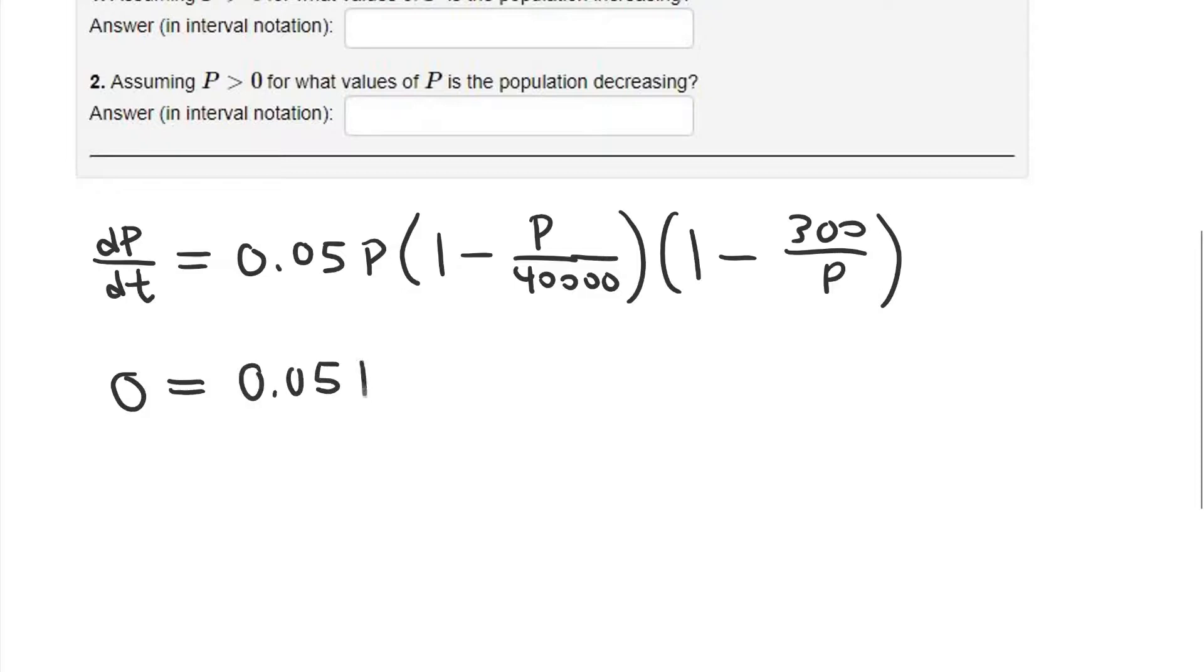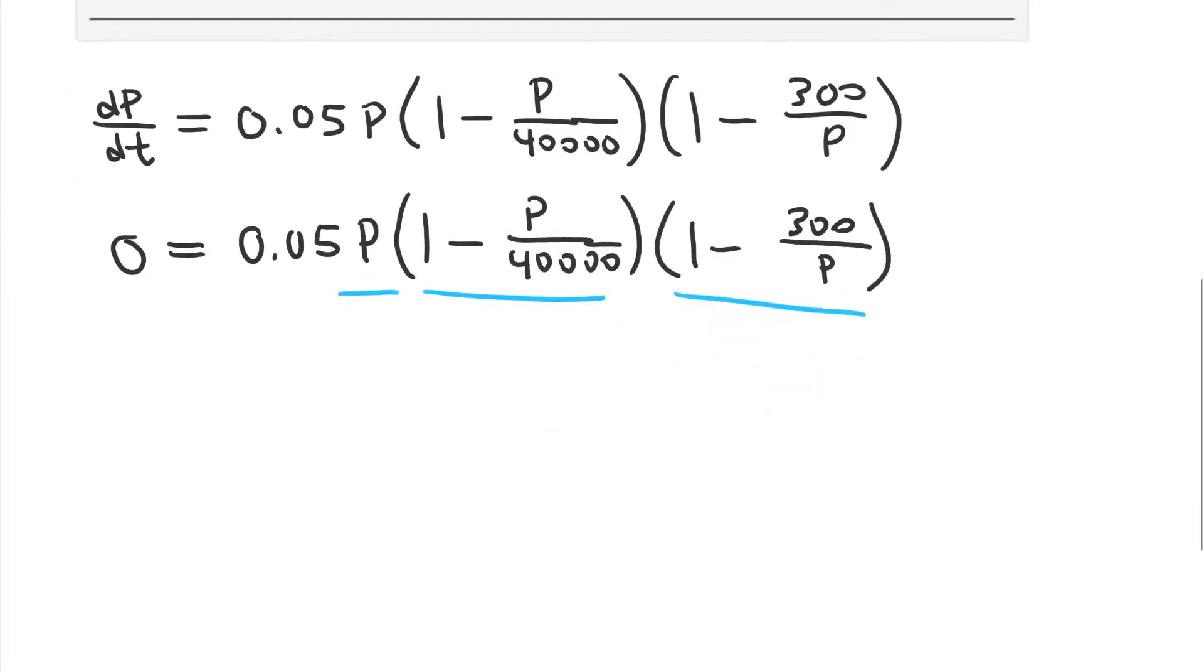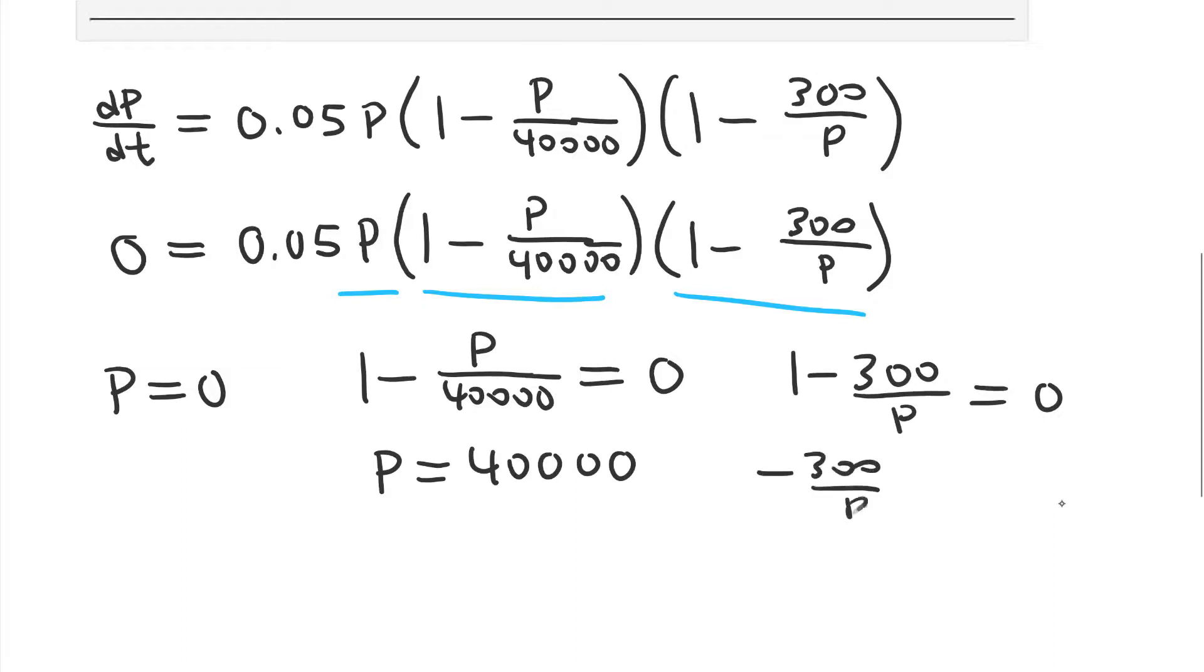So I can just recopy this and set it equal to 0. And of course, when we have three different factors here, we have one factor, a second factor, and a third factor, all equal to 0. This whole expression is equal to 0 if and only if at least one of them is equal to 0. So P equals 0, right, the first thing here. Or 1 minus P over 40,000 is equal to 0. Or the last factor is equal to 0. For this first one, we can rearrange it, and we get P is equal to 40,000. And the last one here, negative 300 divided by P equals negative 1. And so, P is equal to 300.